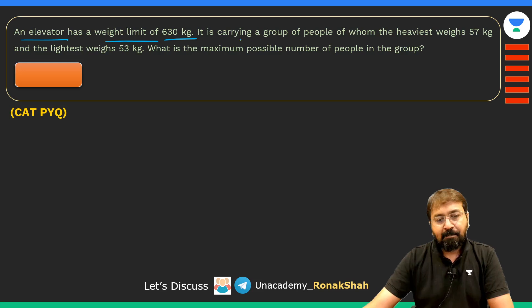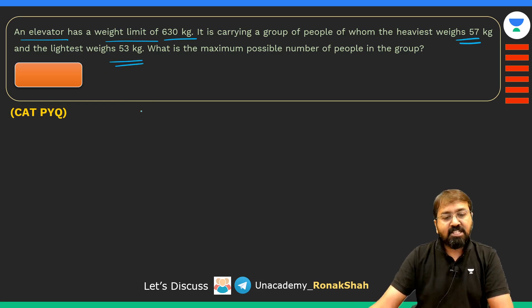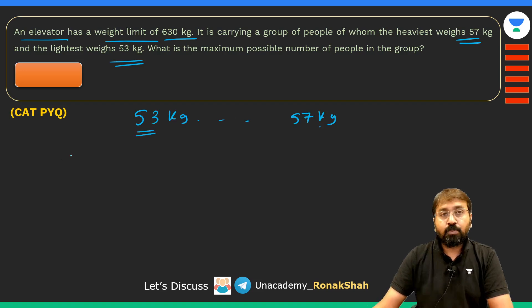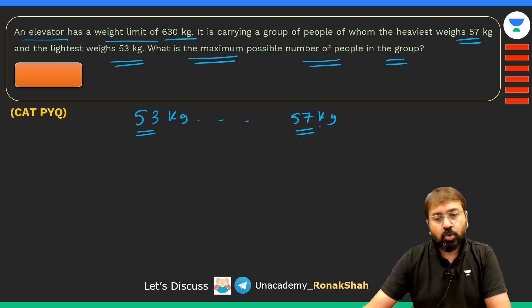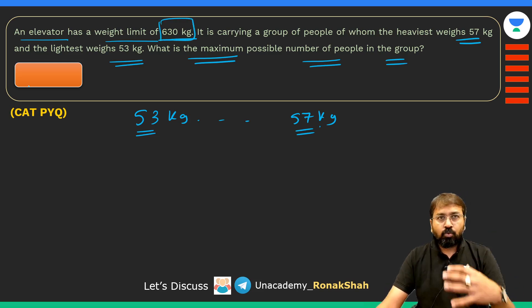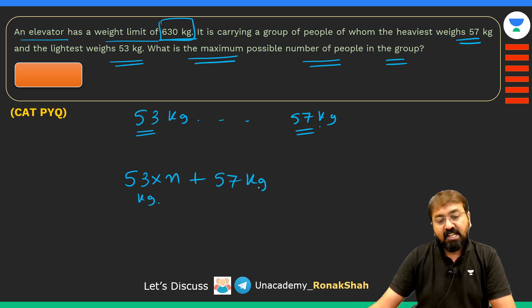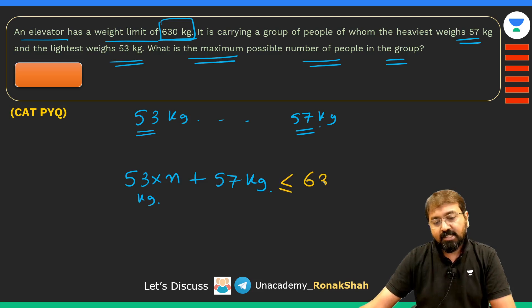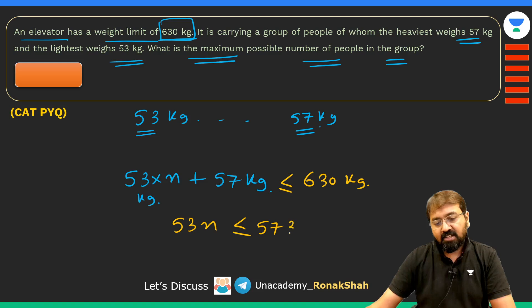Here is one more simple previous year CAT question based on averages. An elevator has a weight limit of 630 kg. It carries a group where the heaviest person weighs 57 kg and the lightest weighs 53 kg. There is at least one person at each extreme weight. What is the maximum possible number of people in the group? To maximize people, we minimize individual weights, so assume n people weigh 53 kg plus one person weighing 57 kg, with total ≤ 630 kg.